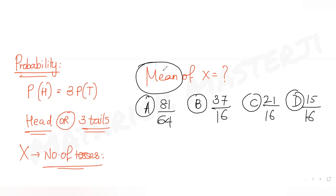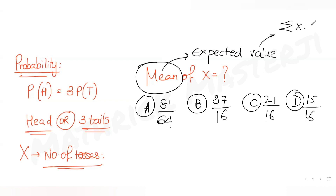Mean is nothing but the expected value of X. Expected value is calculated as summation of X into P(X), where X is the number of tosses and P(X) is the probability for that many number of tosses required.